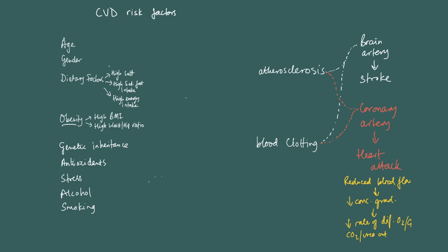Those fats are transported to the fat stores as low-density lipoproteins, and therefore the person's mass increases. As a person's mass increases, it puts greater pressure on the cardiovascular system — more cells need to be supplied with oxygen and other nutrients. Because of that increased demand, it increases the blood pressure. So one reason obesity leads to atherosclerosis is because there's increased blood pressure.